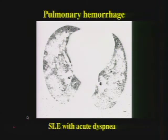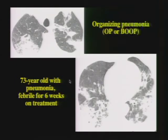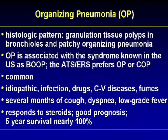Here is a patient with lupus and acute dyspnea showing patchy consolidation — consolidation with acute symptoms. Here is a 73-year-old treated for pneumonia who remains febrile after six weeks — chronic symptoms with patchy areas of consolidation, some peripheral, some central and peribronchial. This is a great appearance for organizing pneumonia or BOOP. Organizing pneumonia is characterized by granulation tissue polyps in bronchioles and patchy organizing pneumonia; it was formerly called bronchiolitis obliterans organizing pneumonia, but the organizing pneumonia component is now emphasized and preferred as the name.